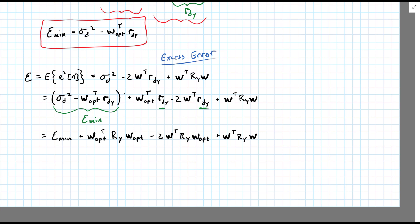That's over on the right, W transpose R_y, W. And then in the middle we have a minus 2 times a cross term. So this is going to be easily factorable into something that looks like E_min plus, and then we'll get W_opt minus W, R_y times W_opt minus W.